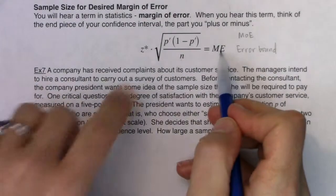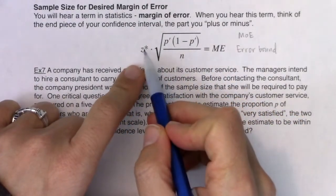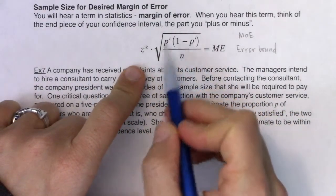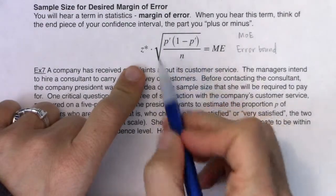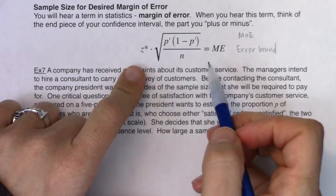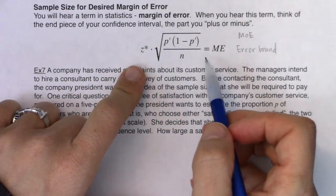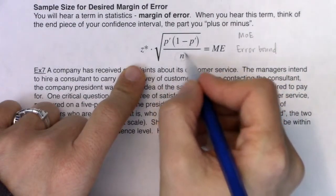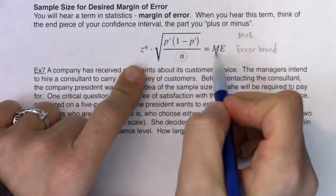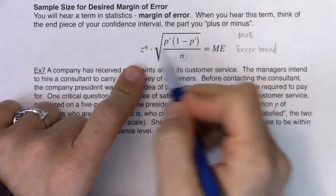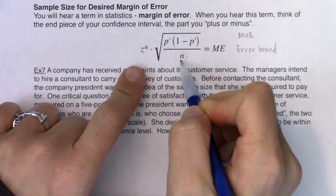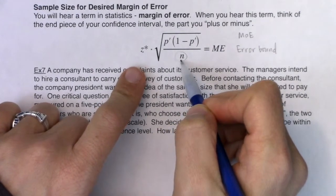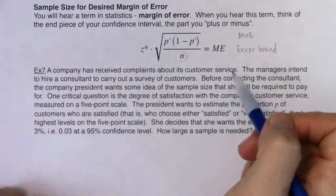Margins of error are always comprised of a critical value times a standard error. We remember this standard error from chapter seven — that was when you were in proportion land. What we're going to do with these problems is solve for sample size. You'll be given a margin of error, and then figure out how many folks you need to include in your survey or experiment to get that margin of error.